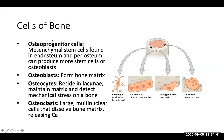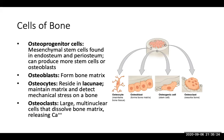Osteoprogenitor cells are mesenchymal stem cells that can produce more stem cells or osteoblasts. Osteoblasts form more bone matrix — a helpful hint is that osteoblasts build bone. Osteocytes are normal functioning bone cells that reside in lacunae, spaces that house them; they maintain the matrix and detect mechanical stress. Osteoclasts are large multinuclear cells that dissolve the bone matrix and release calcium — they break down bone, while osteoblasts build it.